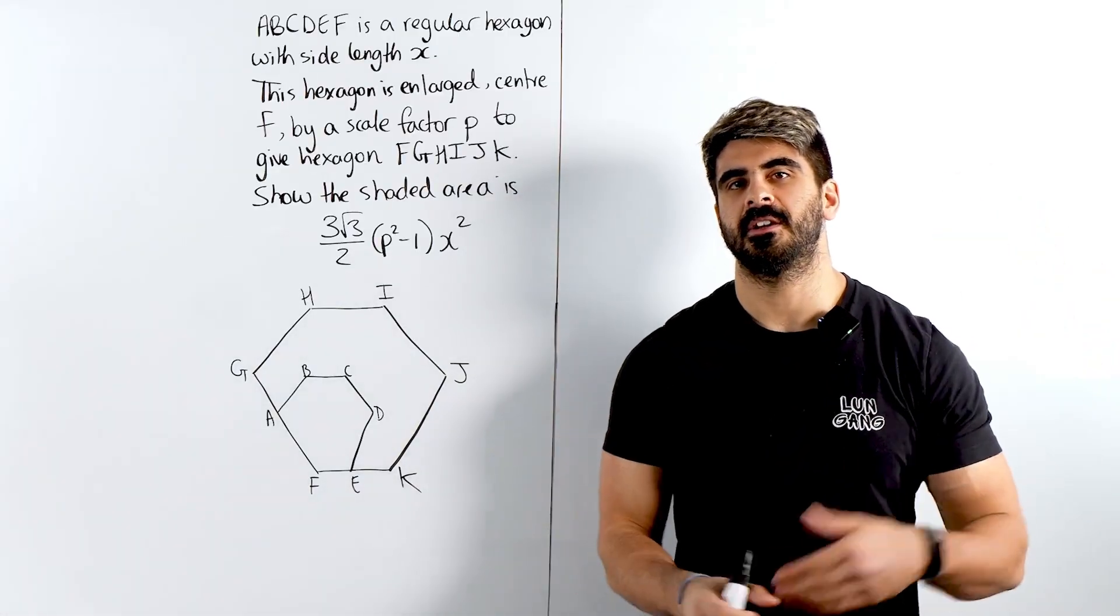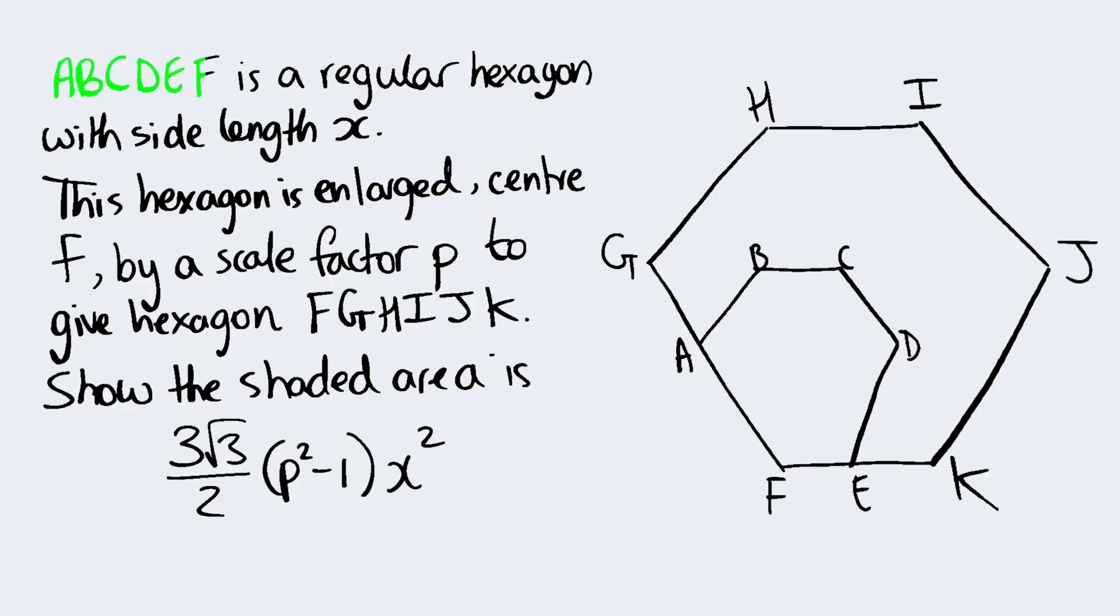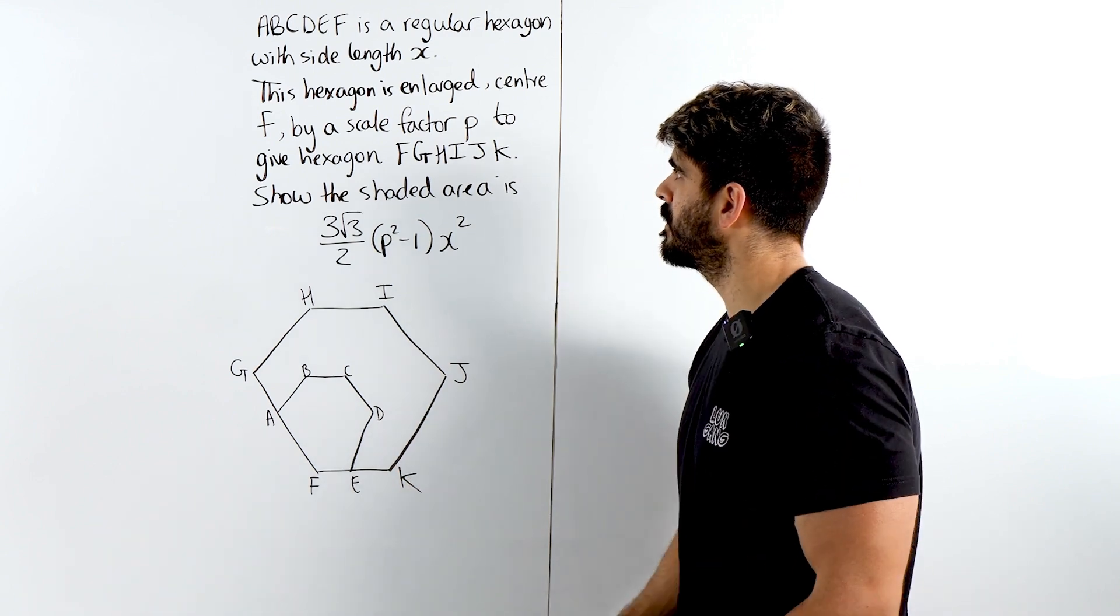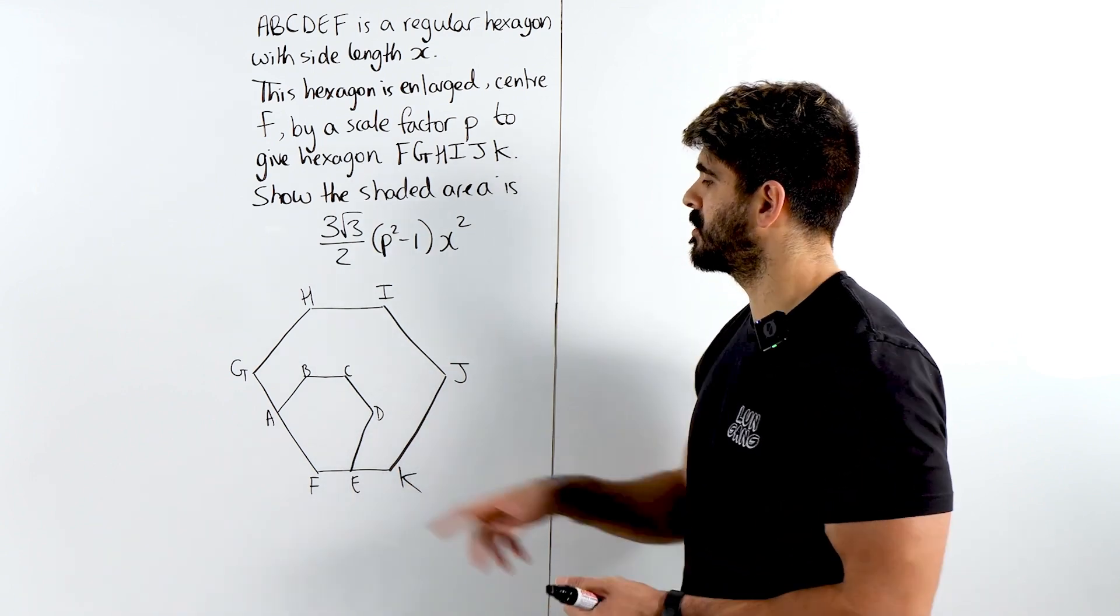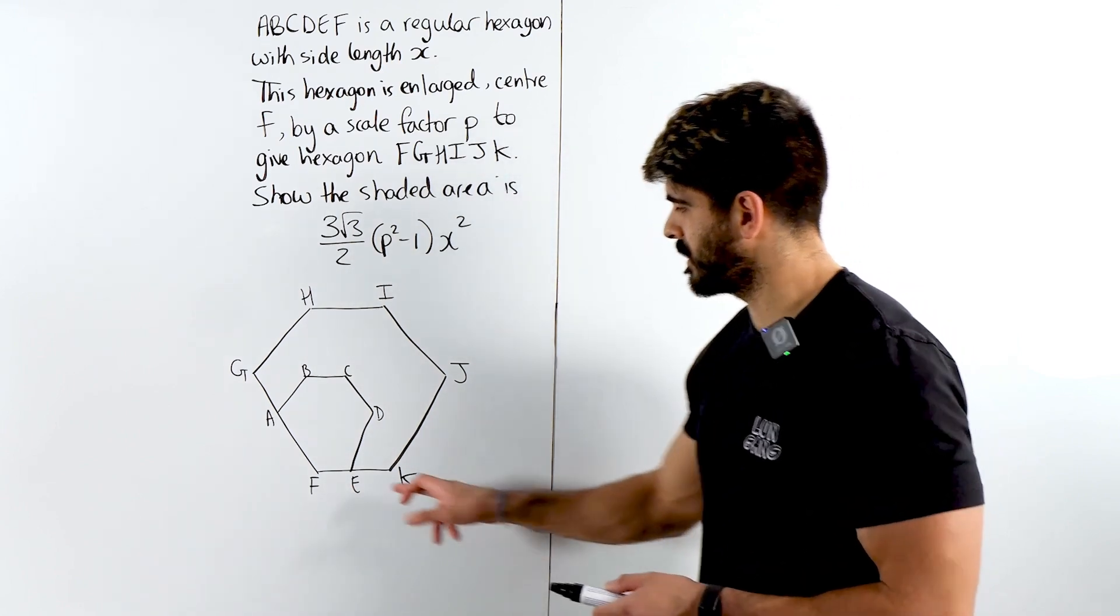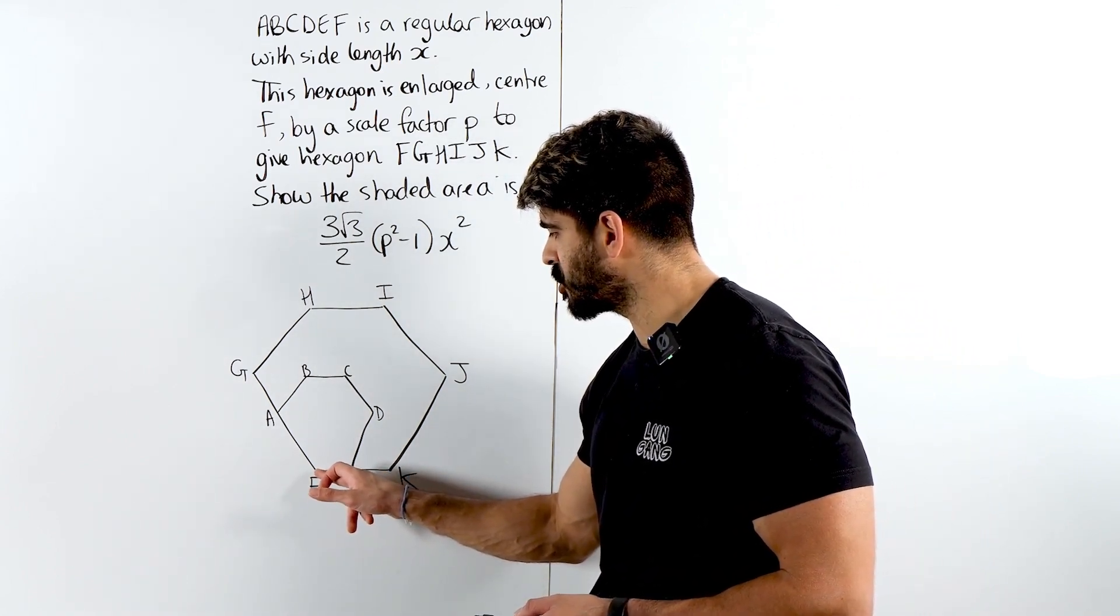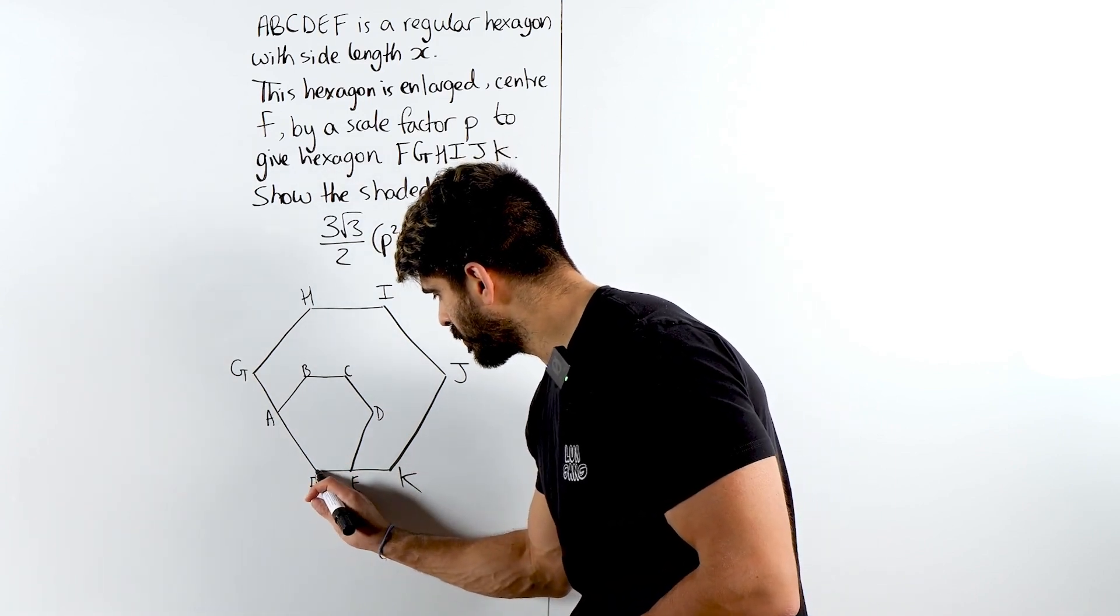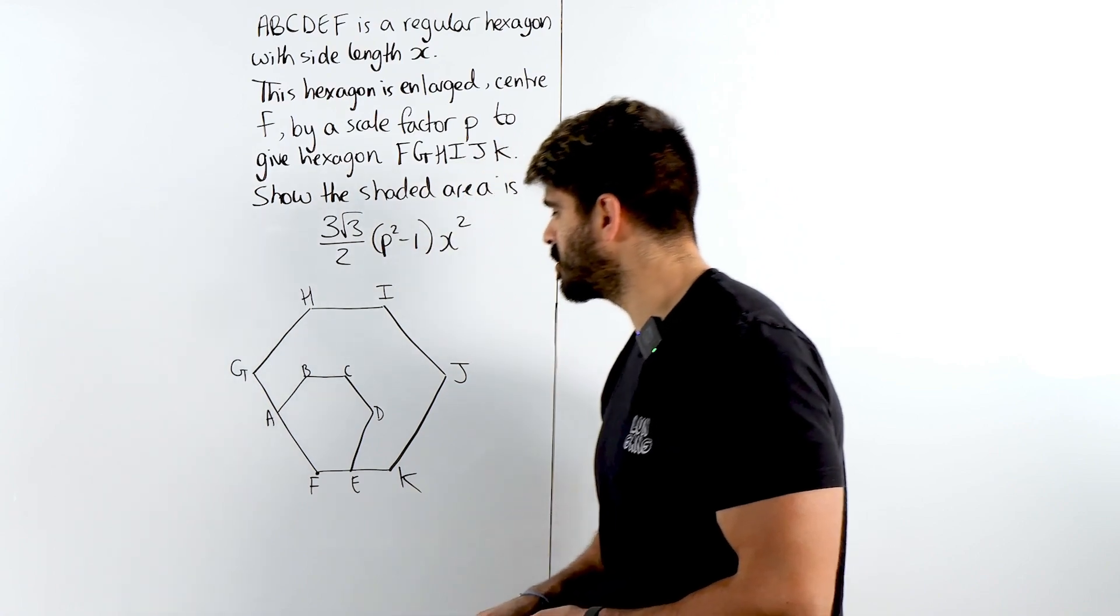Found this question randomly going through Reddit. ABCDEF is a regular hexagon with side length X. This smaller hexagon is enlarged center F by a scale factor P to give this larger hexagon. Now the reason they're telling you that it's center F is because we are enlarging about this point, meaning this point doesn't change.